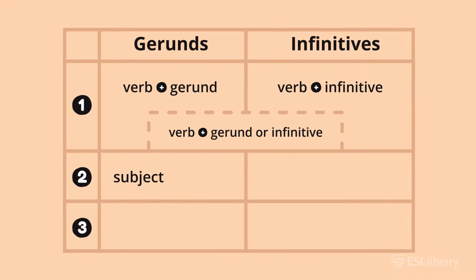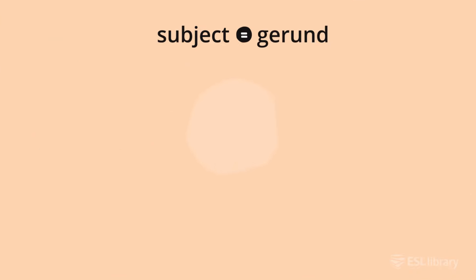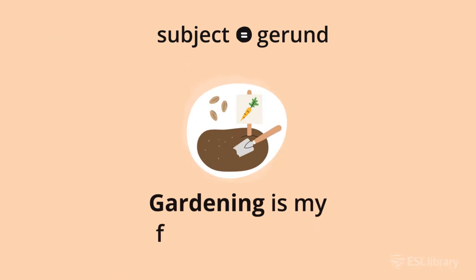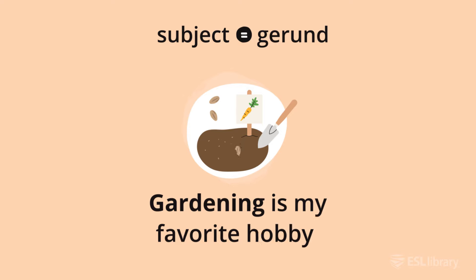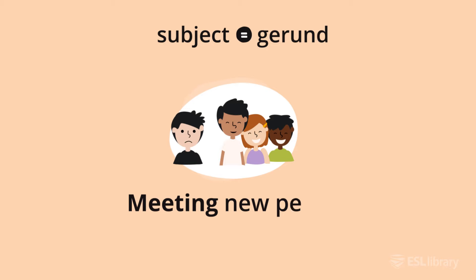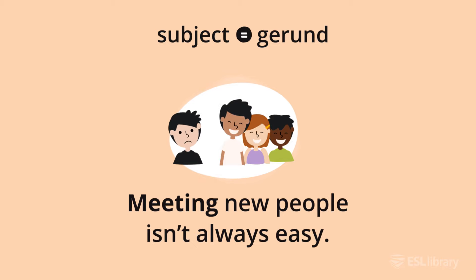The subject of a sentence is usually a gerund. For example, 'gardening is my favorite hobby,' and 'meeting new people isn't always easy.'